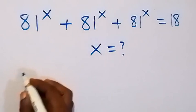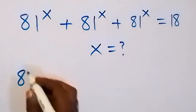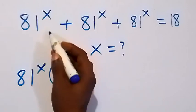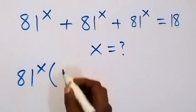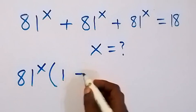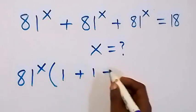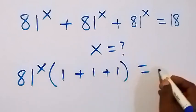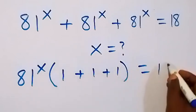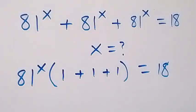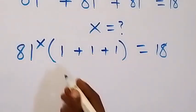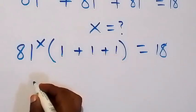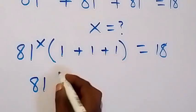Let's factor it out, so this becomes 81 raised to power x, into bracket: 1 will be left, then we also have 1, then plus 1 as well, which is equal to 18. In the next step we have 1 plus 1 plus 1, that's 3, so we have 81 raised to power x.